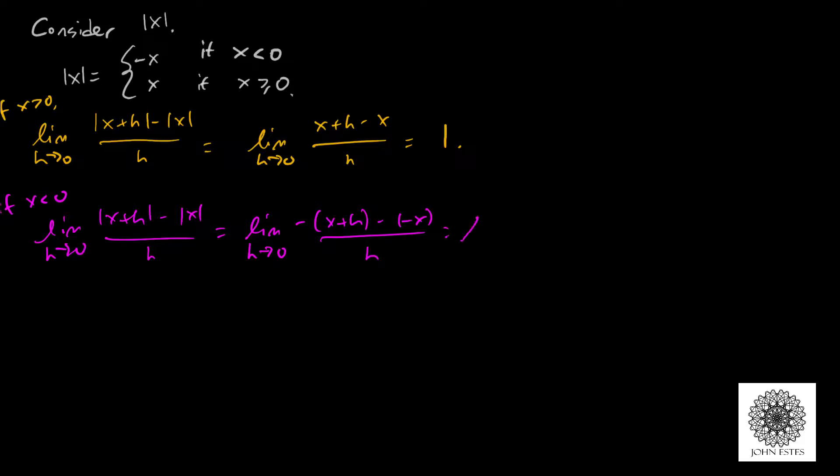Which actually ends up being, the x's cancel, but since I have to distribute that negative, I end up with a negative h over h, which gives me negative 1.